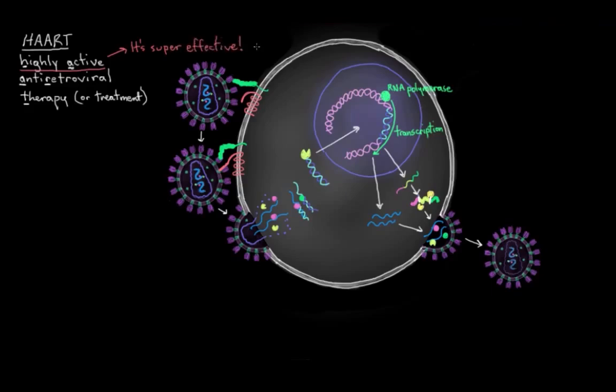Before, we'd give just one type of drug to help control an HIV infection. We'd usually give an NRTI, which stops the reverse transcriptase step in infection of a CD4 cell. But HIV likes to mutate a lot, and it turned out that when only one type of drug was given for an infection, the HIV would eventually become resistant to that type of drug.